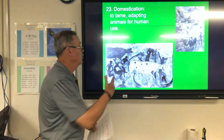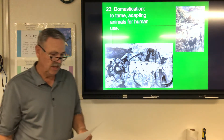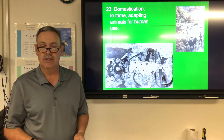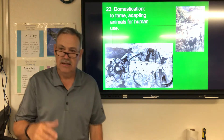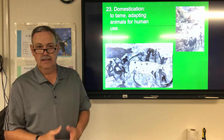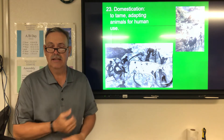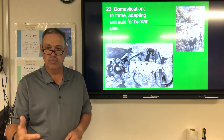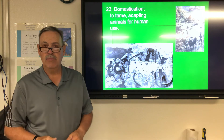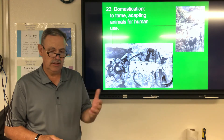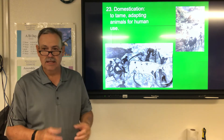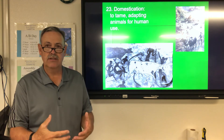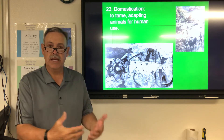That leads us to domestication — taming and adapting animals for human use. You might call them beasts of burden. Later, when something like the plow was invented, those animals could pull the plow. They used the meat, the hides, the bones, and any other material from the animal they could, and also used them as work animals to carry loads.